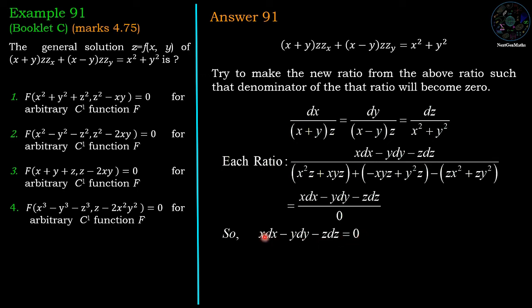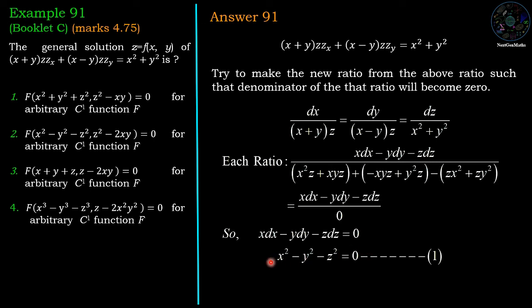Integrating both sides: x²/2 - y²/2 - z²/2 = constant. Multiplying through by 2, we get the first invariant: x² - y² - z² = c₁.